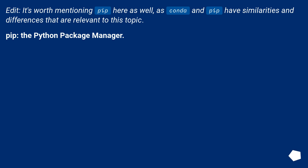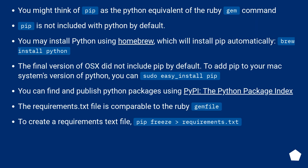It's worth mentioning pip here as well, as pip has similarities and differences that are relevant to this topic. Pip is the Python package manager. You might think of pip as the Python equivalent of the Ruby gem command. Pip is not included with Python by default. You may install Python using Homebrew, which will install pip automatically. The final version of macOS did not include pip by default. To add pip to your Mac system's version of Python, you can run: sudo easy_install pip.